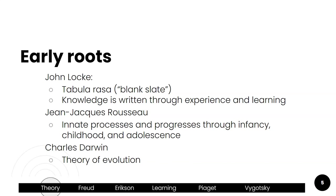Jean-Jacques Rousseau said we do have these innate processes — hard nature — and as we progress through infancy, childhood, and adolescence, the environment will either lower or increase those innate processes, ultimately shaping who you are. So he went a little bit in between. Charles Darwin, who came up with the theory of evolution, is important in psychology. When we talk about physical development, which features help us survive our environment? Other theories have gone further and looked at cognitive or social-emotional development in terms of helping us survive our environment.